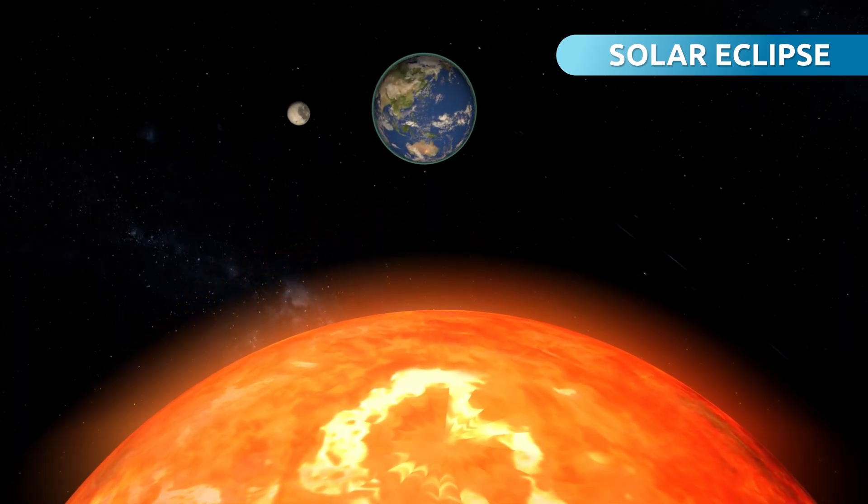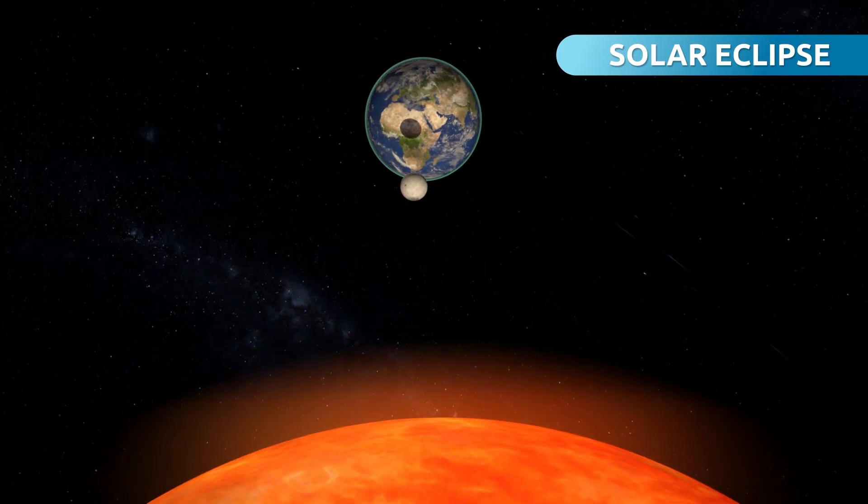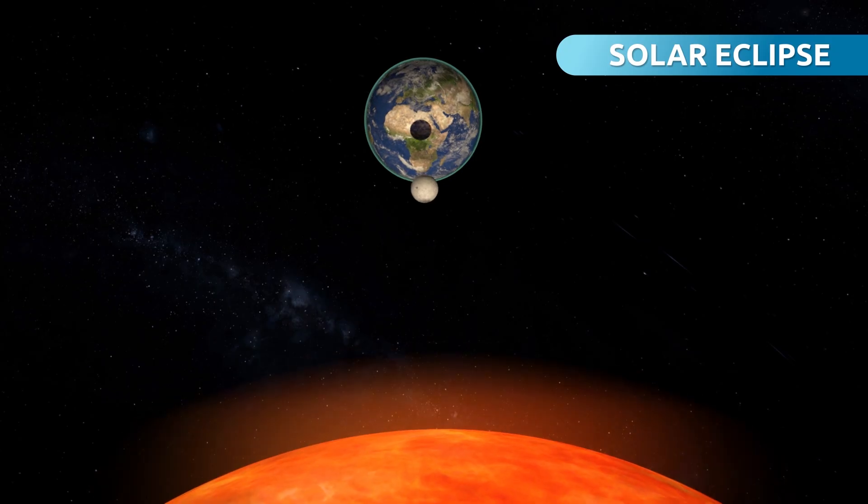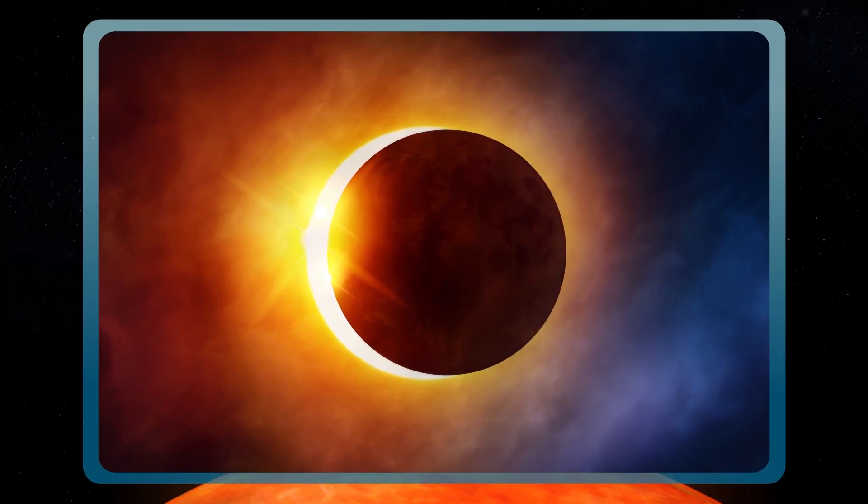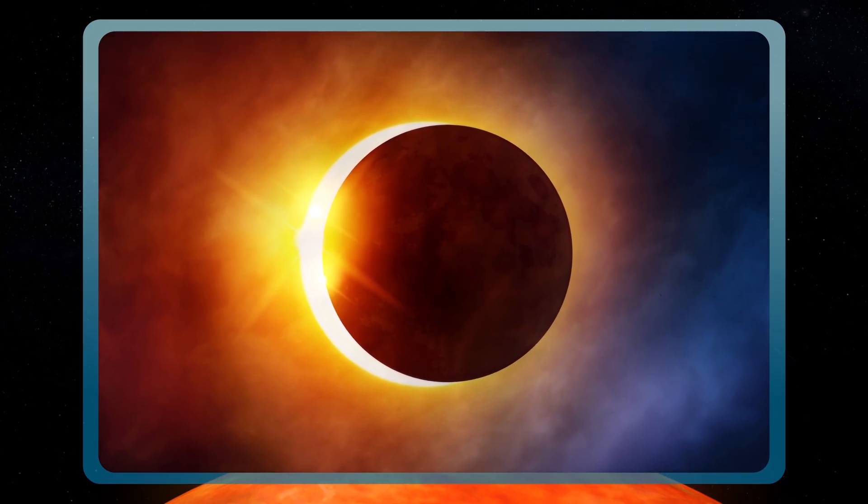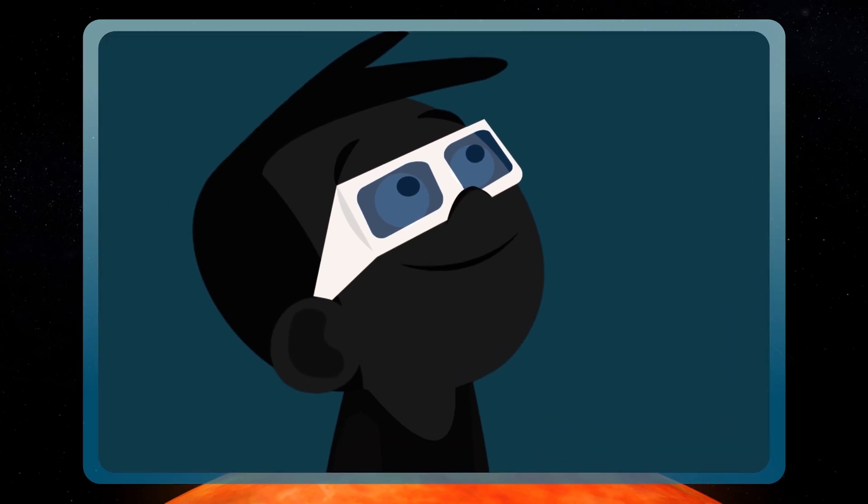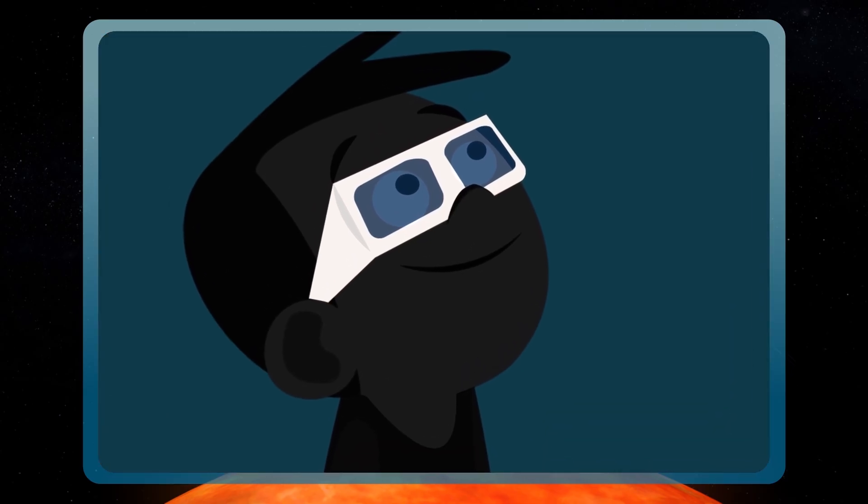This means that during daytime, the Moon positions itself in front of the Sun, covering it up. That's why from Earth we see something similar to a ring of light. It's very important to know that to observe an eclipse, it's necessary to cover up your eyes using special eyewear.